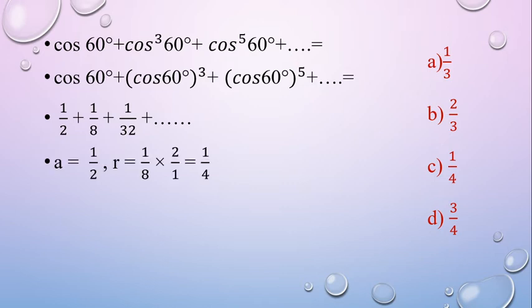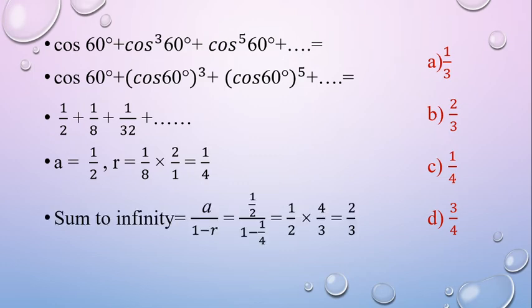Now we can see these 3 terms. First term 1/2, common ratio 1/4. The number of terms is infinity. So, sum to infinity: a by 1 minus r, which is 1/2 divided by (1 minus 1/4). That is 1/2 multiplied by 4/3, giving 2/3. Our answer is option B, 2/3.